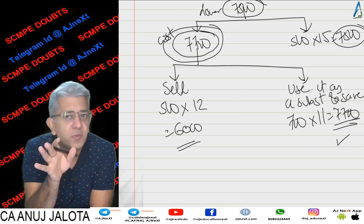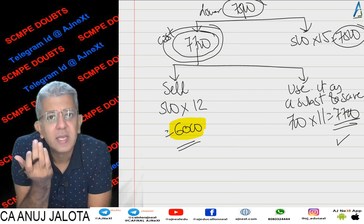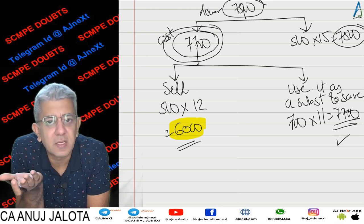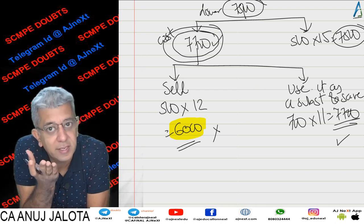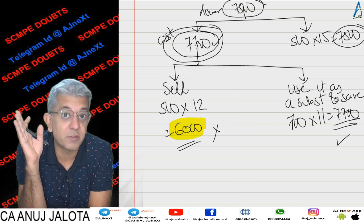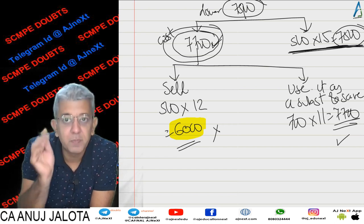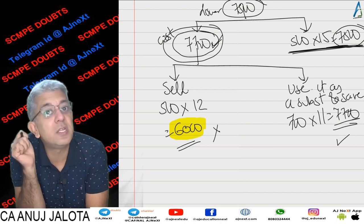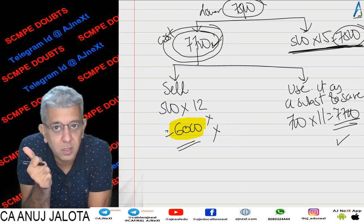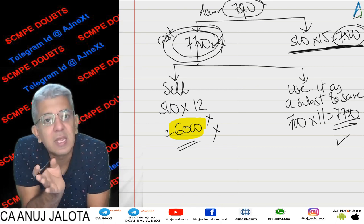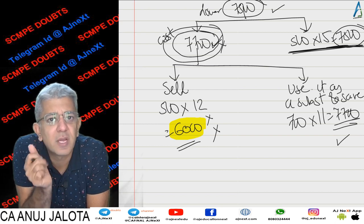Why is ₹6,000 irrelevant? Because if the offer had not come, I would not have sold D — and even if the offer has come, I'm still not selling D. So ₹6,000 is irrelevant. Why is ₹7,700 irrelevant? If the offer had not come, you had decided to use D as a substitute for Material Z, saving ₹7,700. Now even with the offer, you will purchase D from the market for the offer, and the existing D stock will still be used in place of Z — so ₹7,700 will still be saved. You were never supposed to earn ₹6,000 — irrelevant. The ₹7,700 saving exists in both cases — irrelevant. But ₹7,500 you never had to incur before; now you definitely will — so that becomes the relevant cost.